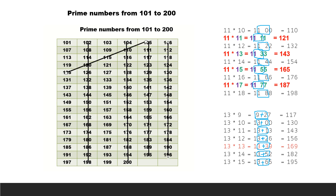Continuing multiples of 5: 130, 135, 140, 145, 150, 155. Then 160, 165, 170, 175, 180, 185. And finally 190, 195, 200. All multiples of 5 are now crossed out.